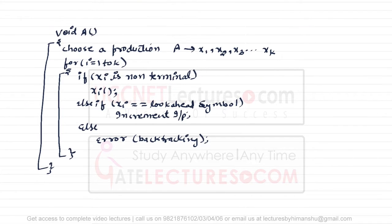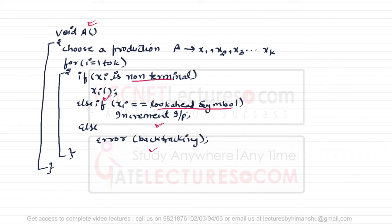The algorithm works like this: we call function A, then choose a production from all productions x1, x2, x3, x4, and so on. If xi is a non-terminal, we call that variable recursively. Else, if xi matches the lookahead symbol, we increment the input pointer and perform a return. Otherwise, we signal an error and do backtracking.